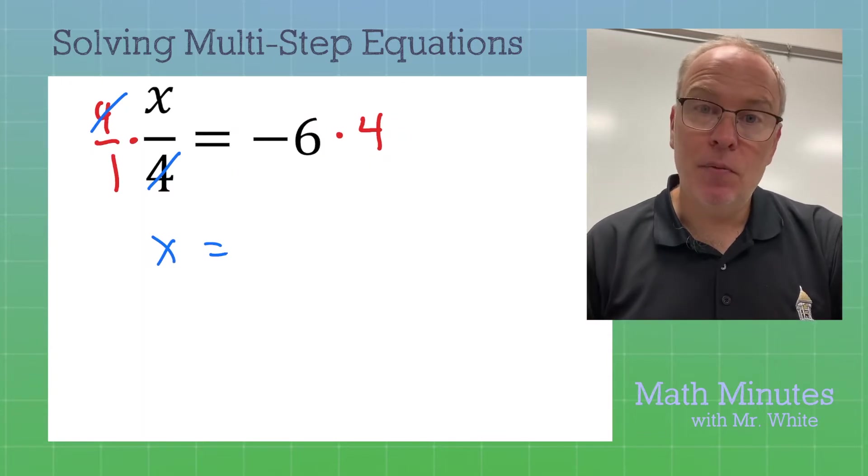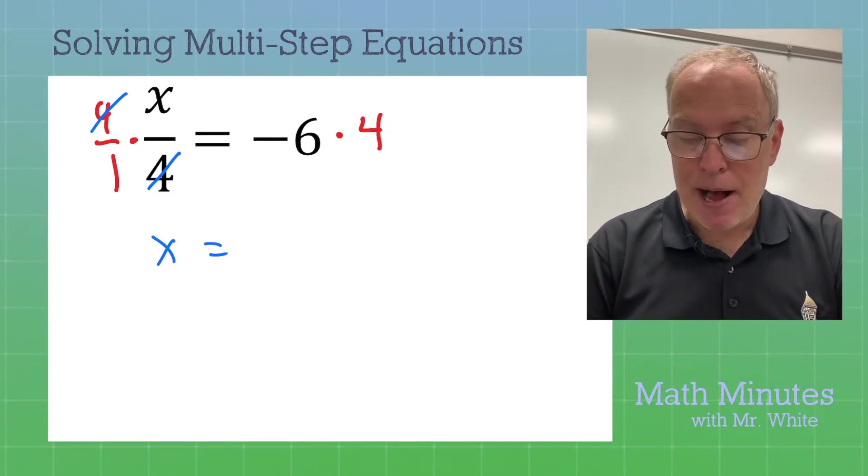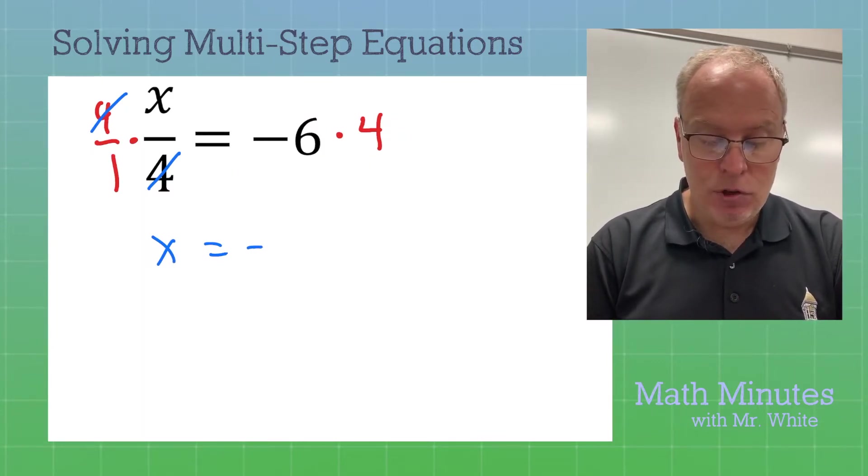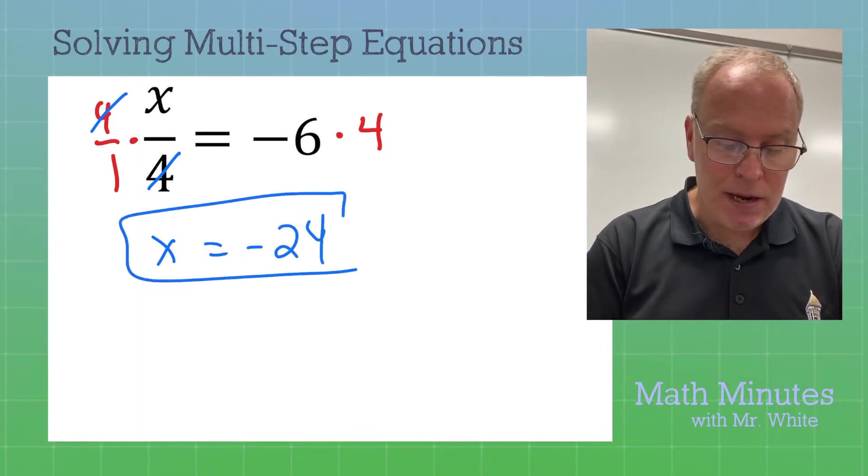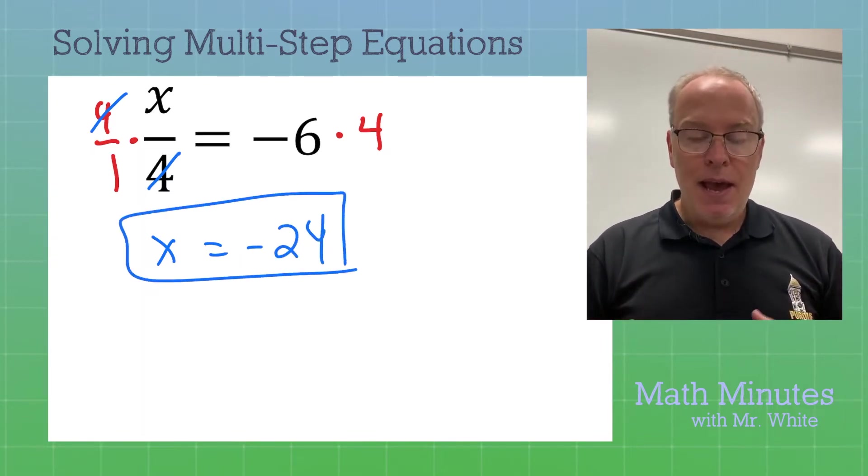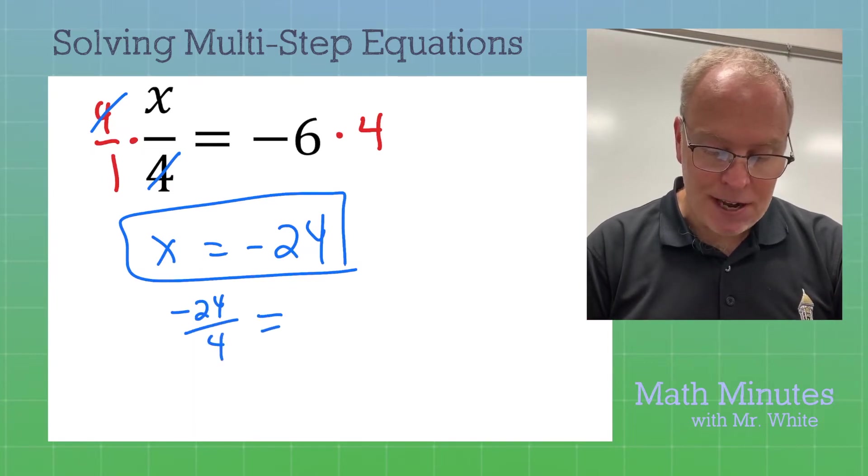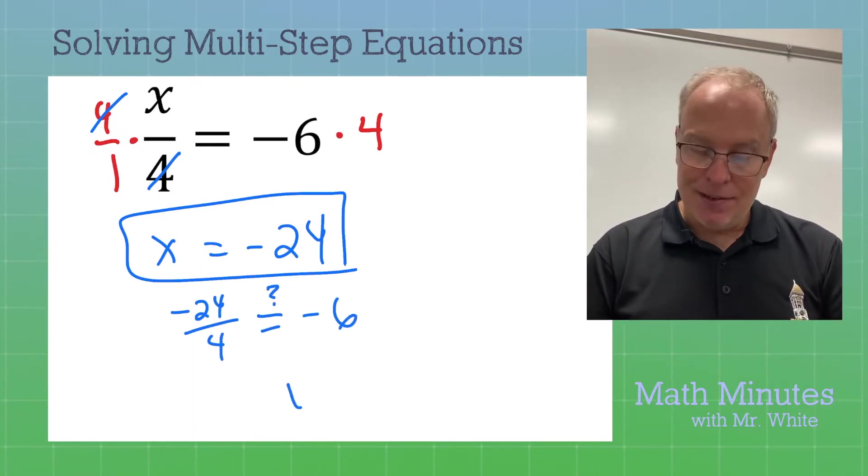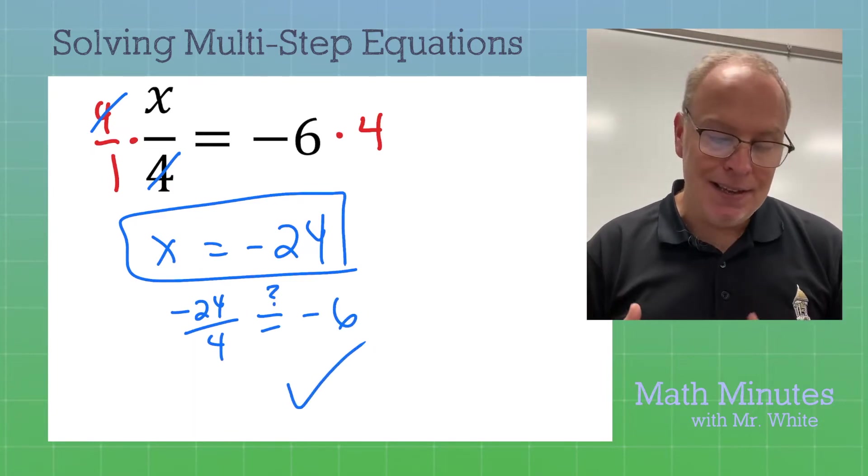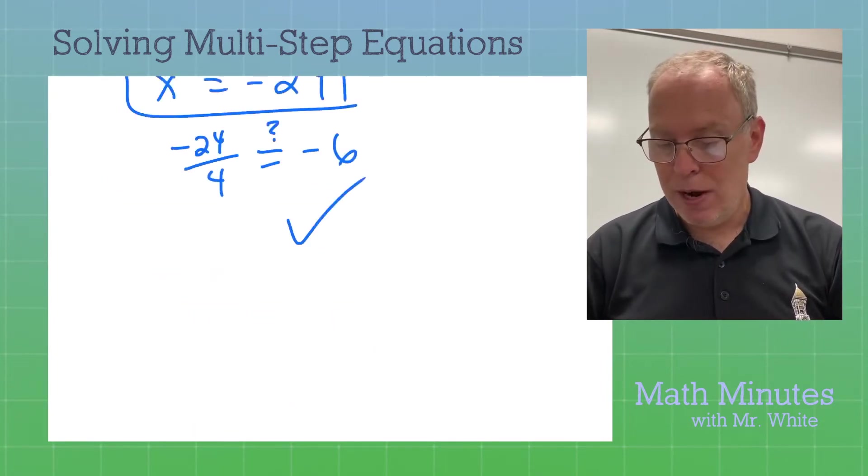We then look at the arithmetic that we need to do on the right. A negative times a positive is a negative. So negative 24. Negative 24 is the answer. And you can plug that in. Negative 24 divided by 4. Does that equal negative 6? Yes, it does. So that is the solution. x equals negative 24.